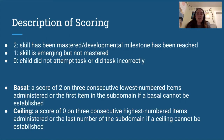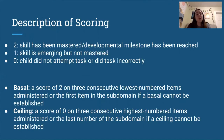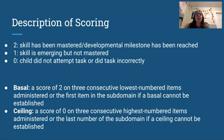For scoring: a score of 2 means the skill has been mastered or the developmental milestone has been reached; 1 means the skill is emerging but not mastered; and 0 means the child did not attempt the task or did it incorrectly. The basal is a score of 2 on three consecutive lowest-numbered items, and the ceiling is a score of 0 on three consecutive highest-numbered items — when the child scores three zeros in a row, that's where you stop.